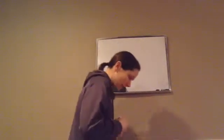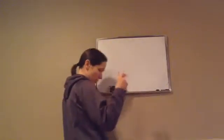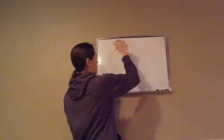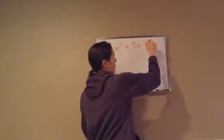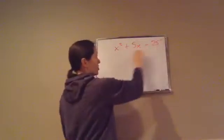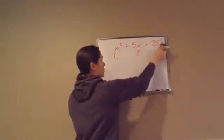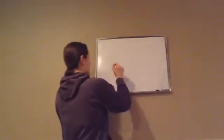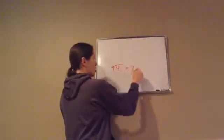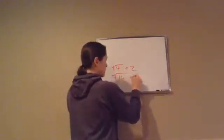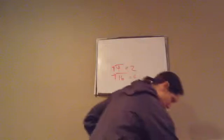So basically what they're talking about with factoring the difference of two squares is this: you're going to get a binomial. You're used to trinomials being like x squared plus 5x minus 25 and doing the factoring for that. This time you're going to do binomials. The only reason they're binomials and you're able to factor them is because they are squares — for example, square root of 4 is 2, square root of 16 is 4.